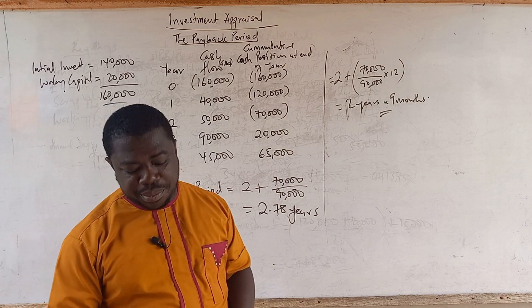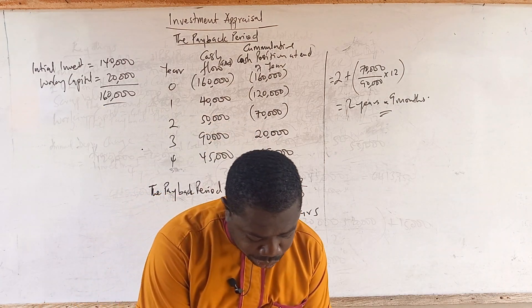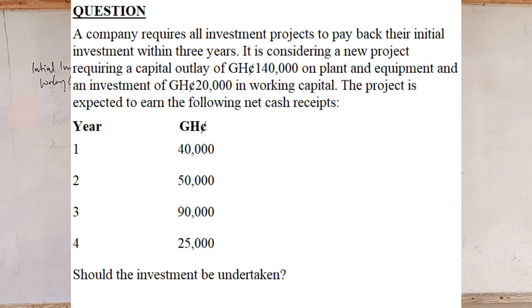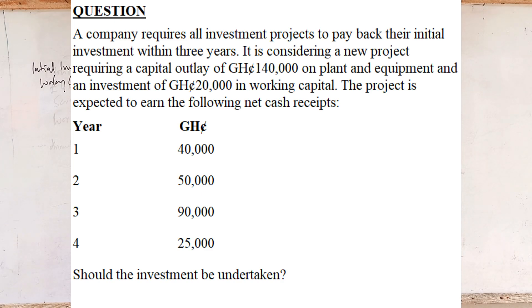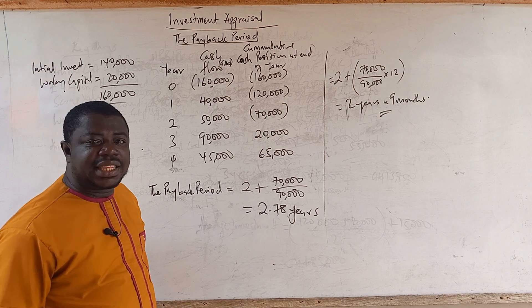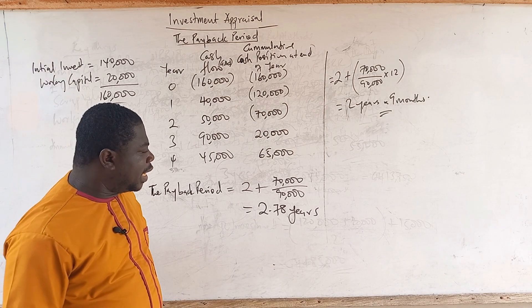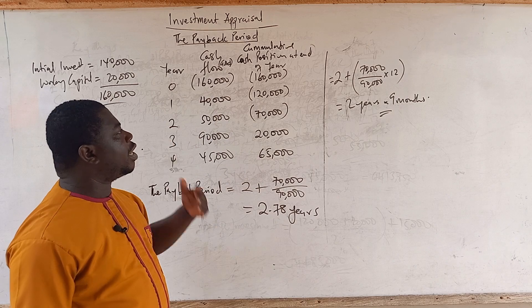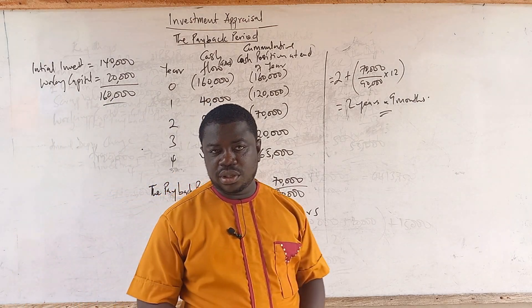Going back to the minimum acceptable payback stated in the question: the company requires all investment projects to pay back within 3 years. Since our payback period is less than 3 years, the project should be acceptable and embarked upon. That is what the payback period is all about.